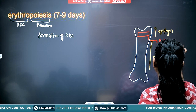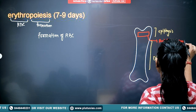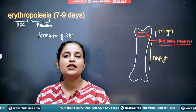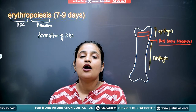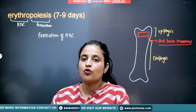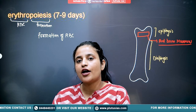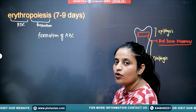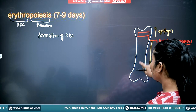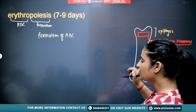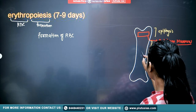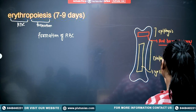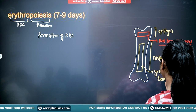In the red bone marrow, the process of erythropoiesis — formation of red blood cells — as well as leukopoiesis (WBC formation) and thrombopoiesis (platelet formation) all occur. In the diaphysis, the long shafted part, yellow bone marrow is present.